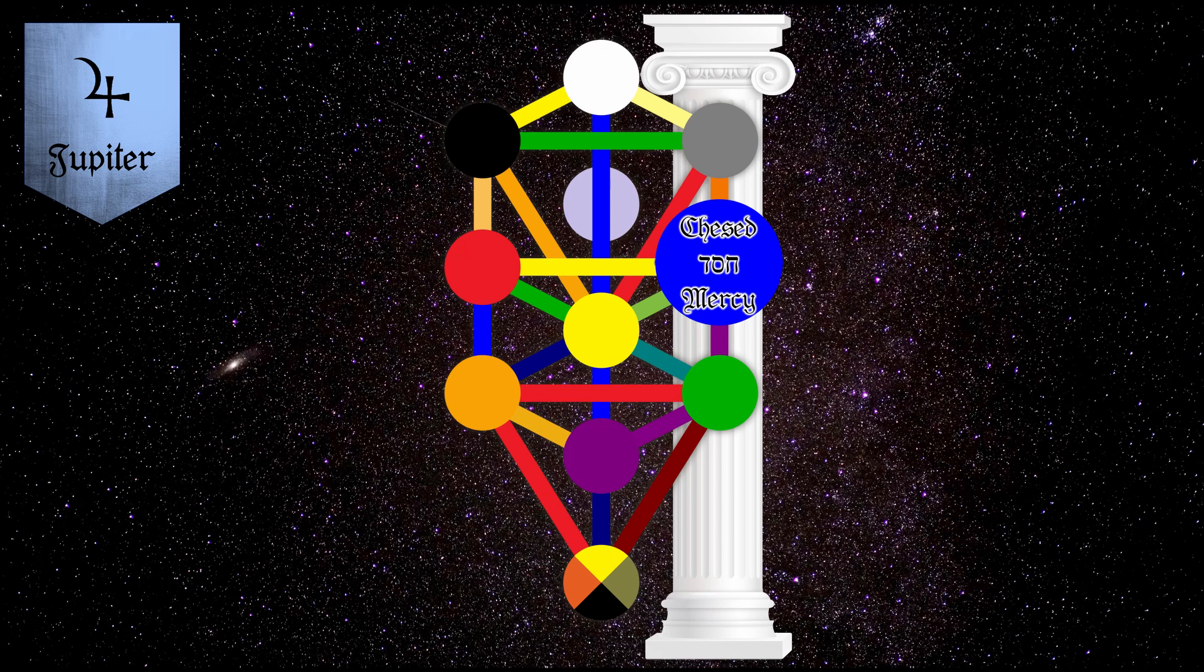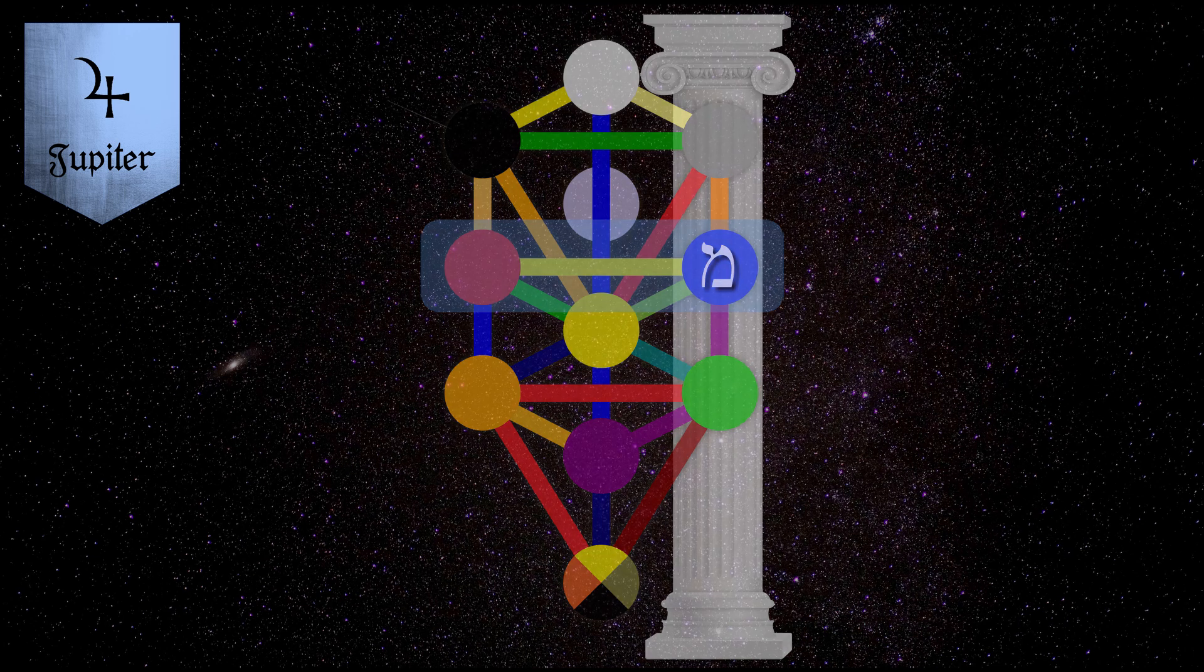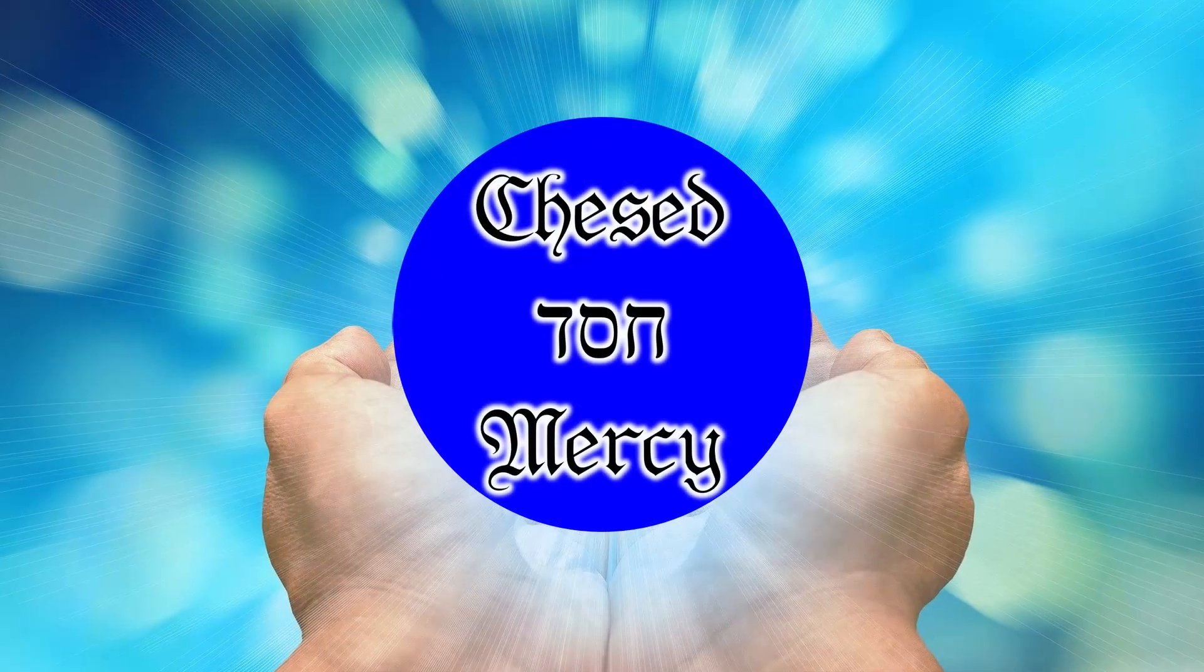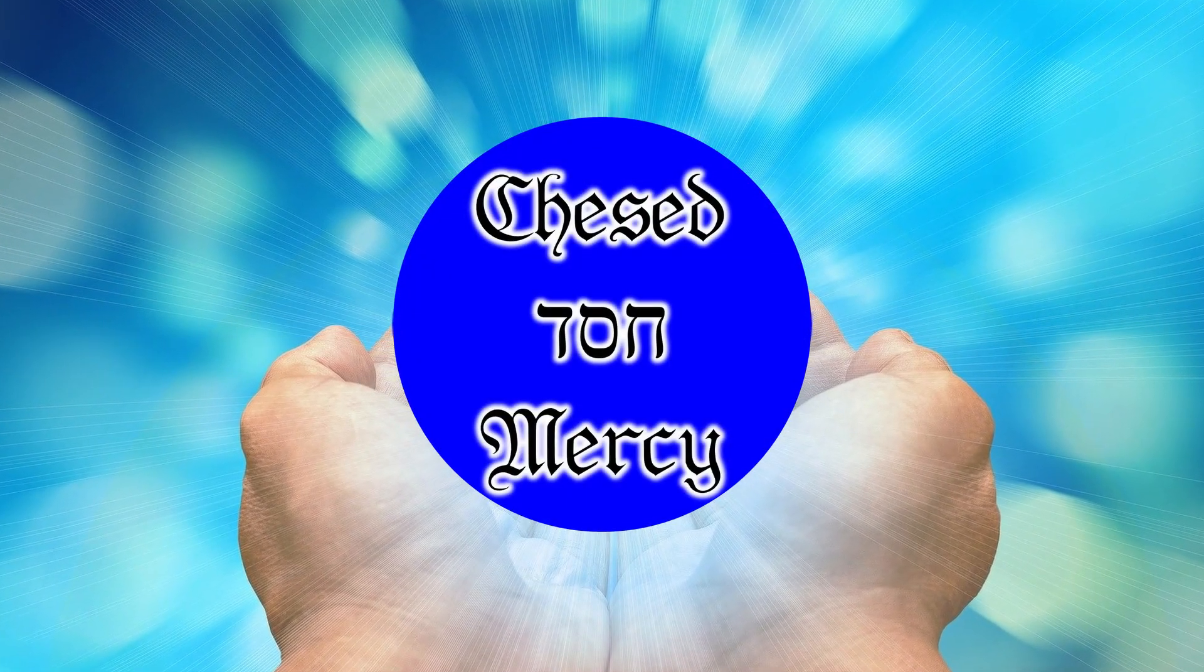The pillar of mercy is also named after chesed. The function of the pillar of mercy is of a creative nature. The basic meaning of chesed is therefore form-giving and creative. Chesed is the benevolent principle which enables a righteous order. The sephirah chesed corresponds to the principle of positive ethics. Thou shalt.